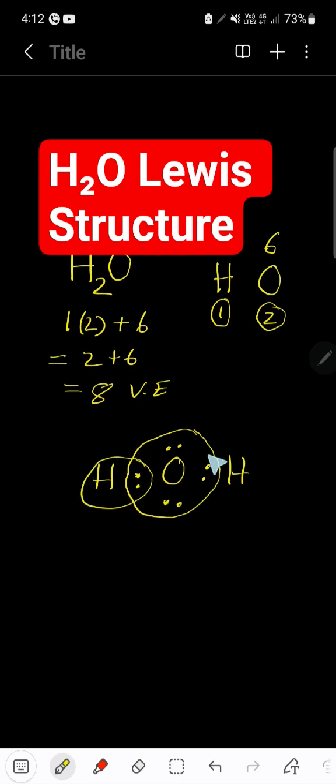This hydrogen has duet. This hydrogen has duet. So this is the Lewis dot structure of H2O water.